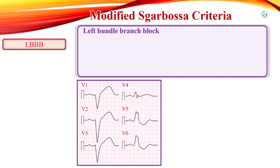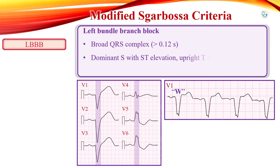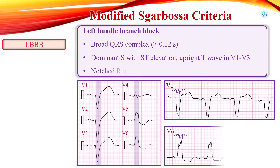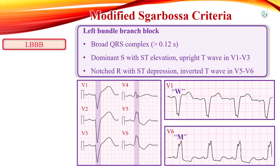In left bundle branch block or ventricular paced rhythm, the EKG shows a broad QRS complex greater than 120 ms. Left precordial leads show a deep and broad S wave that may be notched and resemble the letter W. Leads V5 and V6 show a broad, clumsy, and notched R wave resembling the letter M.